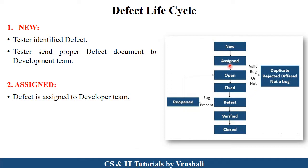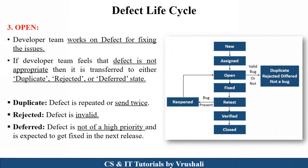After that, there is the assigned state, where all the defects are assigned to the developer team for solving. After assigning, there is the open state. Here, the developer opens a particular defect and checks whether it is valid or invalid. If the defect is valid, they move to the next state — the fixed state — for solving. But if the defect is invalid, they transfer it to one of three states: duplicate, rejected, or deferred.